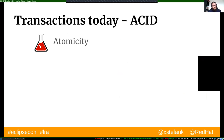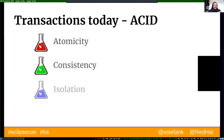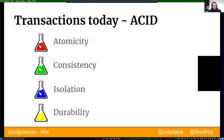Most of you probably know what ACID stands for. Atomicity is the all-or-nothing property — we want all operations in the transaction to perform or none of them. Consistency means the system must always be in a consistent state. Isolation means that for one transaction, other parallel transactions seem as if they haven't started or are already finished.